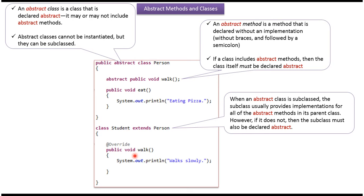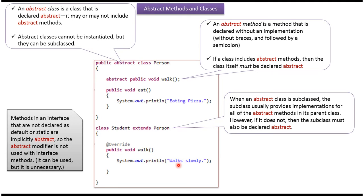In this case, the Student class provides an implementation of the abstract method walk. By default, all methods declared in an interface are abstract methods.